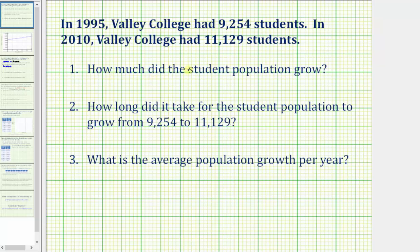Number one, we're asked how much did the student population grow. To determine the amount of student population growth, we need to find the difference between the number of students in 2010 and 1995. We'll start with 11,129 and subtract 9,254. So 11,129 minus 9,254 equals 1,875 students. The student population increased by 1,875 students from 1995 to 2010.